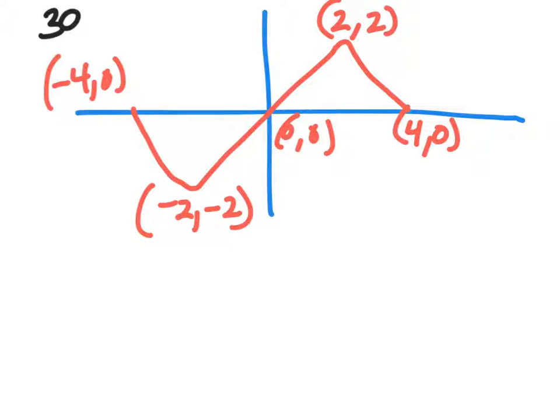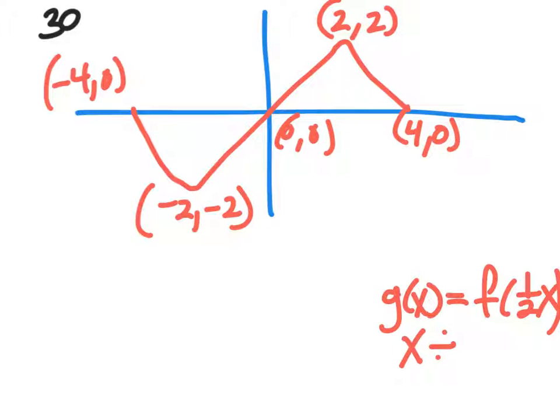For number 30, we're looking at g of x is equal to f of 1 half x. And in looking at this problem again, we know that anything that is on the inside, the opposite is going to happen. So we're going to take each x-coordinate and divide them by a half. In other words, each x-coordinate is going to be multiplied by 2.